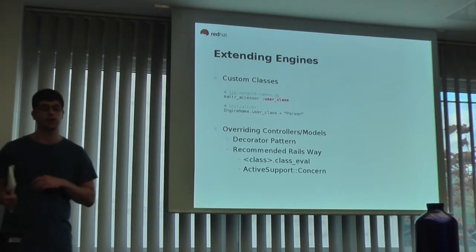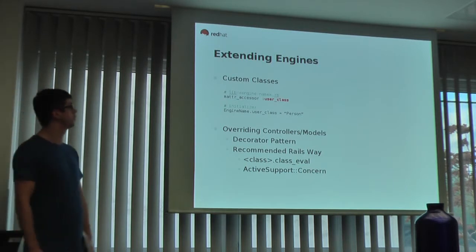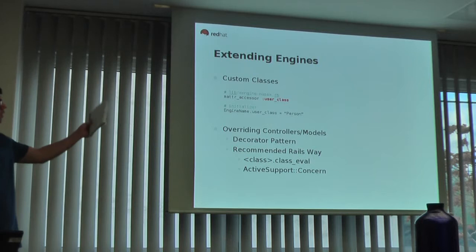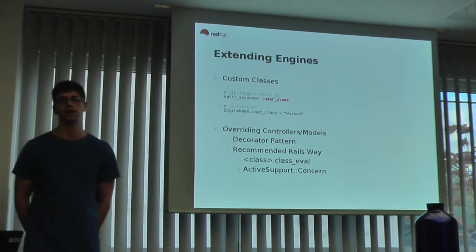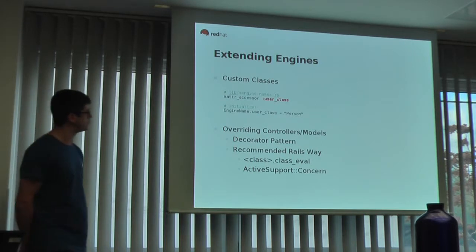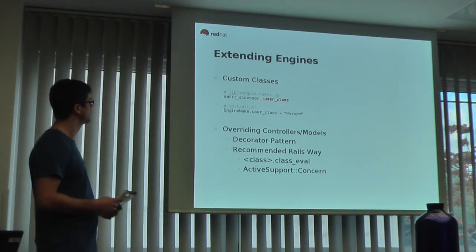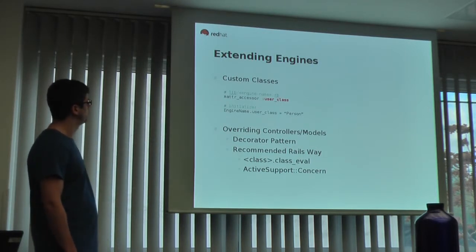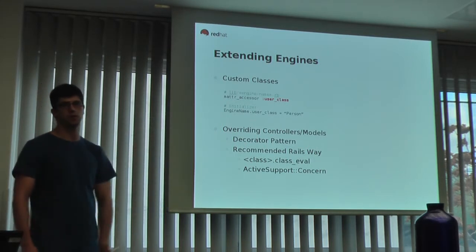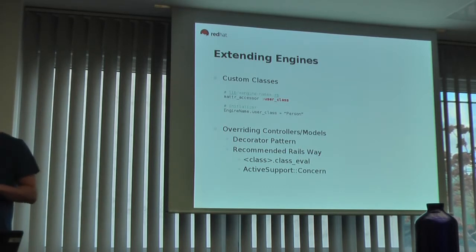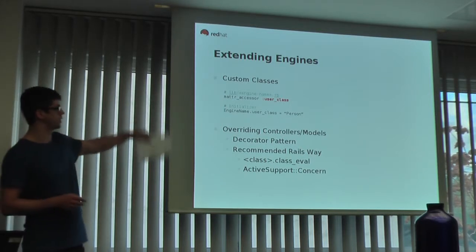Once you've got an engine included inside your host Rails application, you might want to extend it. One example is where you might want to use a host application class inside the engine — you might not want to specify a User model in the engine, because the host application is likely to provide that class itself. So you can set a module accessor, for example user_class, which is a method on the module, and then set that class name to the host application class. In general, if your engine code needs to access models in your host application, this is how you do it.